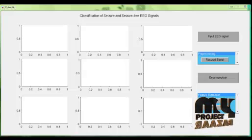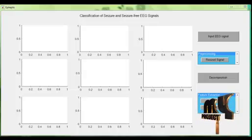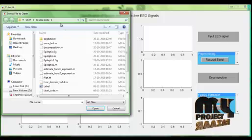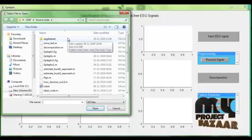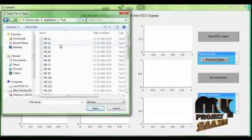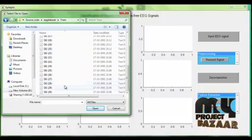It is our GUI design representing the classification of seizure and seizure-free EEG signals. First click the input EEG signal button. The dataset which is asking. Click on train files and select any one EEG signal.